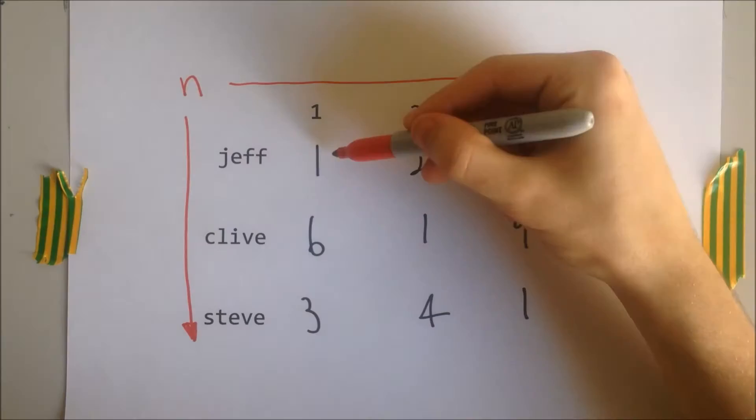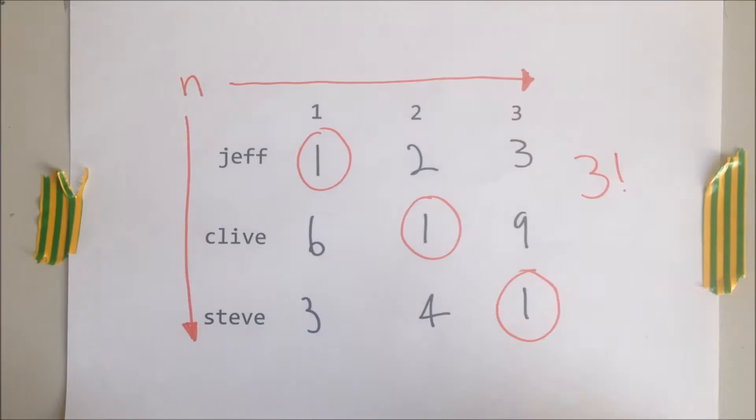In this example, it's simple and obvious. Jeff gets job 1, Clive gets job 2, and Steve gets job 3, giving us an overall cost of 3. But what happens when n is a lot bigger than 3?